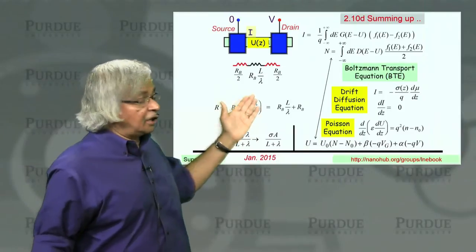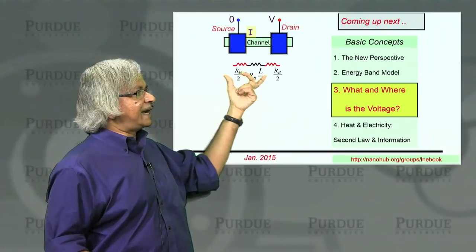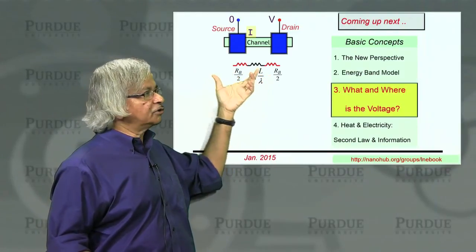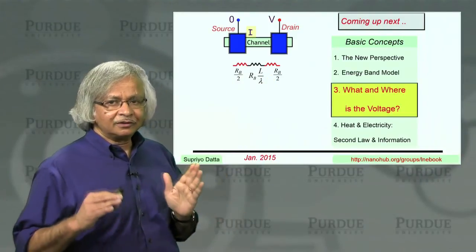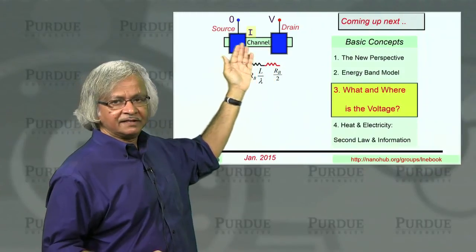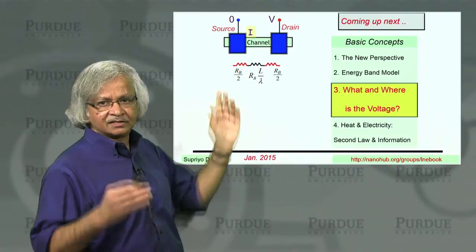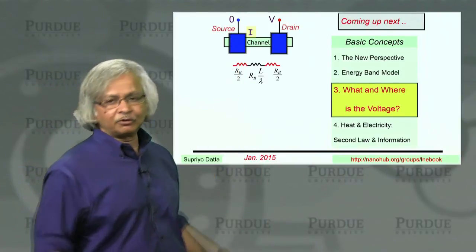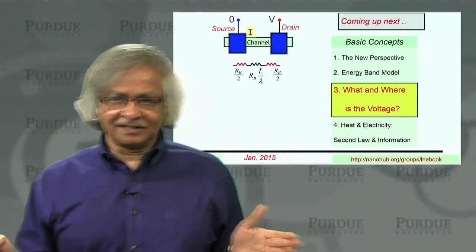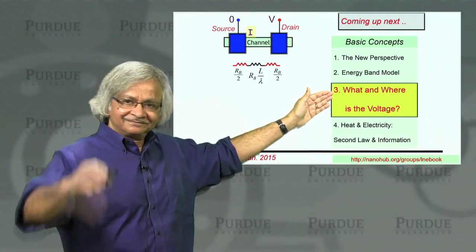Now, the part we haven't talked about then is that this extra ballistic resistance is actually associated with the interface. And in order to understand that, we need to talk about how the potential changes inside a device. Because when you run a current, as you know, any time there is a resistance, there is a voltage drop across it. And so that's what we'll be doing in Unit 3. That is, what and where is the resistance? Or equivalently, what and where is the voltage? Thank you.